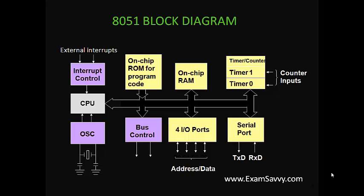Bus control handles arithmetic operations — if any arithmetic operation is performed, bus control takes care of it. The address signal, data signal, and control signal are all managed by bus control. We have totally 4 ports in 8051, with 32 pins total, each port having 8 pins, with both data and address lines present. There is also a serial port used for serial communication, including transmission and reception.